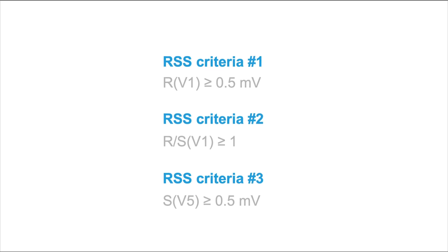I want you to remember three RSS criteria. RSS criteria number 1: If the R in V1 is greater than or equal to 0.5 millivolts, then the RSS criteria number 1 is positive. RSS criteria number 2: If the R to S ratio in V1 is greater than or equal to 1, then RSS criteria number 2 is positive. RSS criteria number 3: If the S in V5 is greater than or equal to 0.5 millivolts, then RSS criteria number 3 is positive.